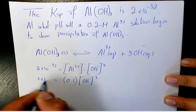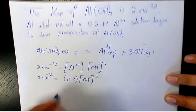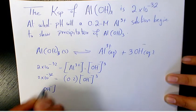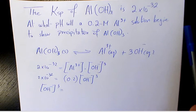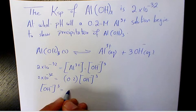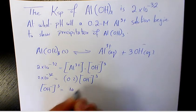2×10⁻³², so [OH⁻]³ equals 2×10⁻³² divided by 0.2, that's gonna be 10⁻³¹.